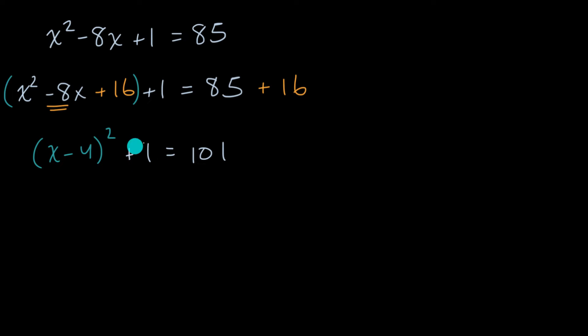And now we want to get rid of this one on the left-hand side. And the easiest way we can do that is subtract one from both sides. That way we'll just isolate that x minus four squared. And we are left with x minus four squared is going to be equal to 100.